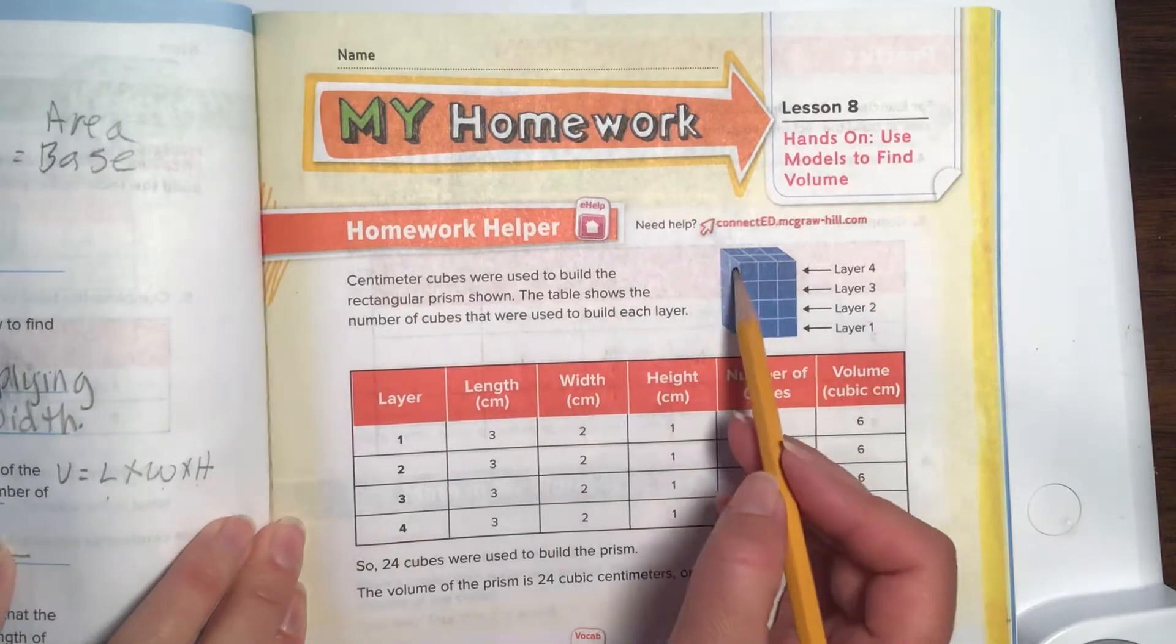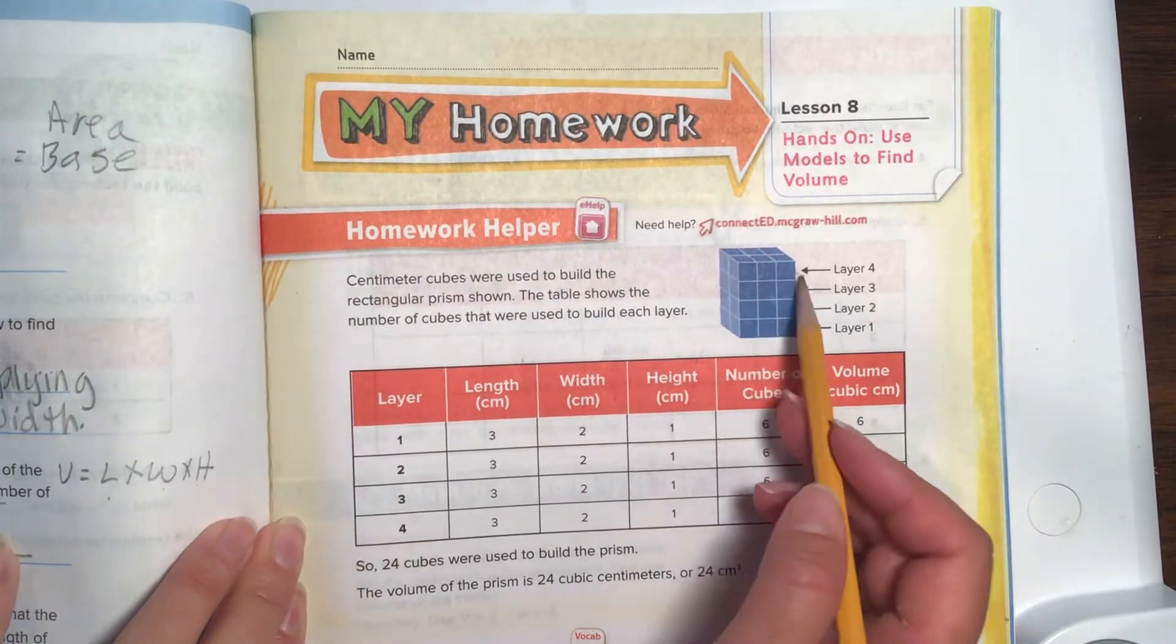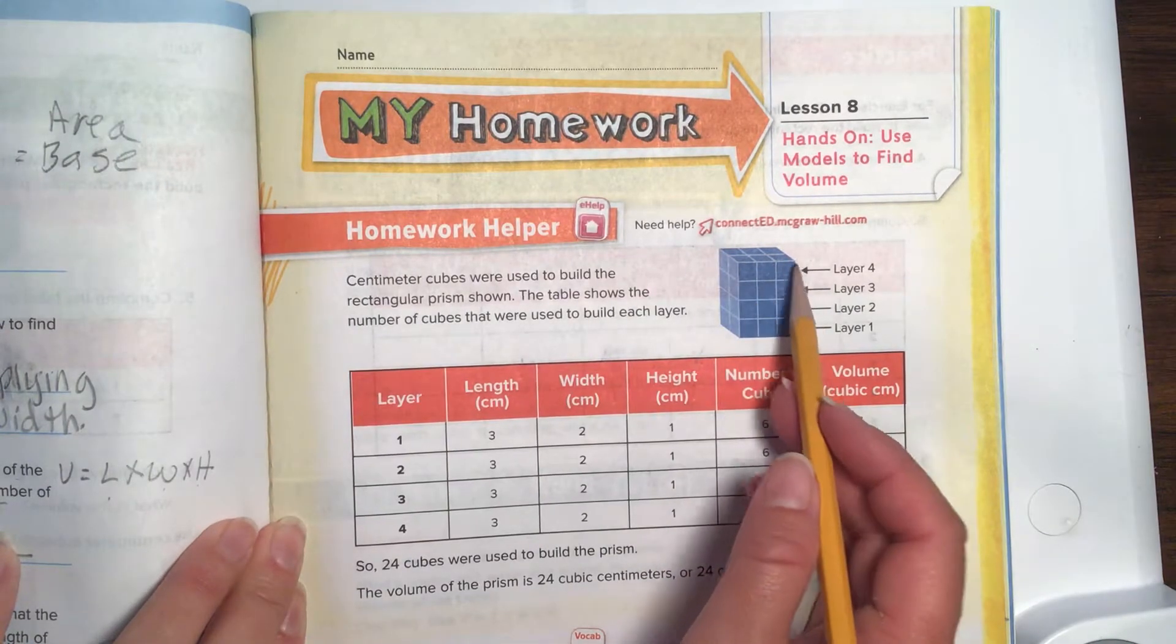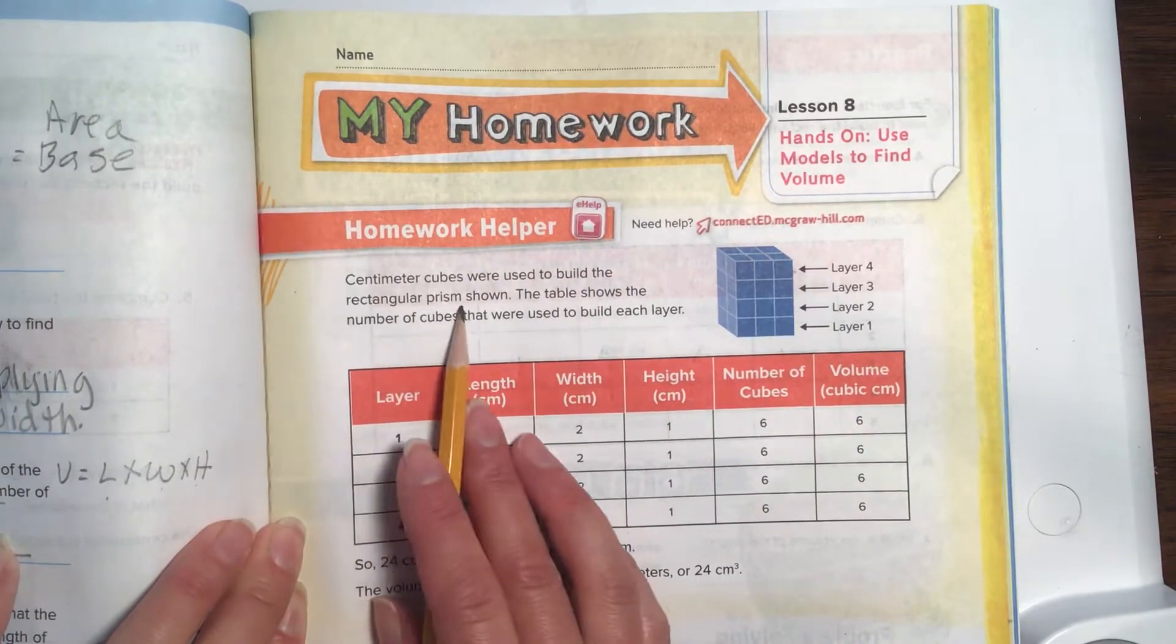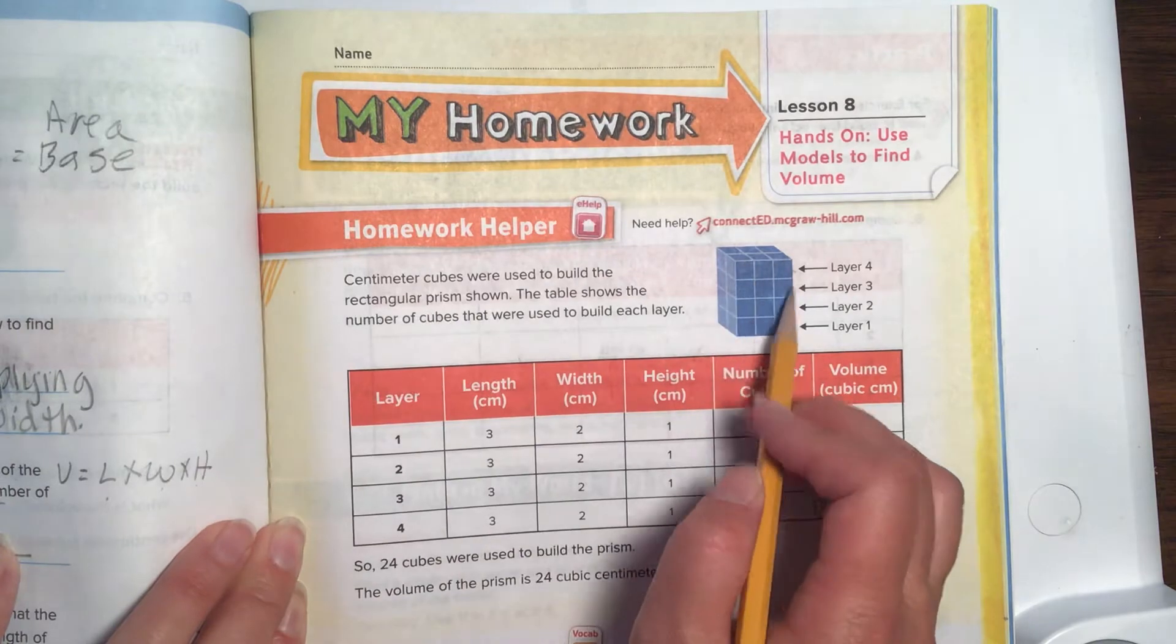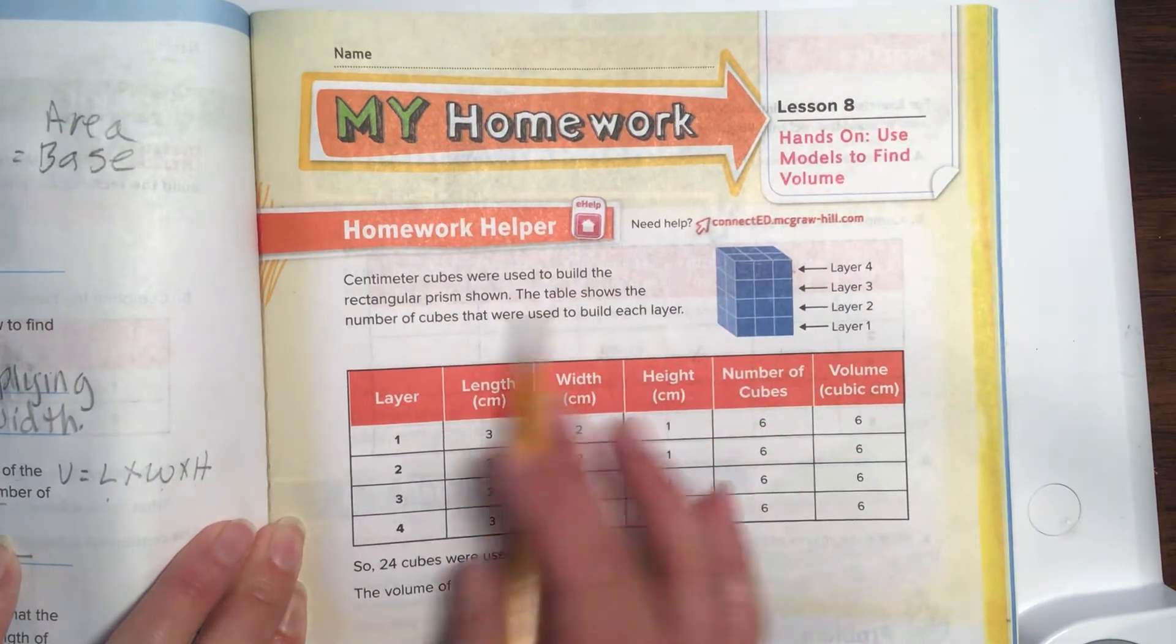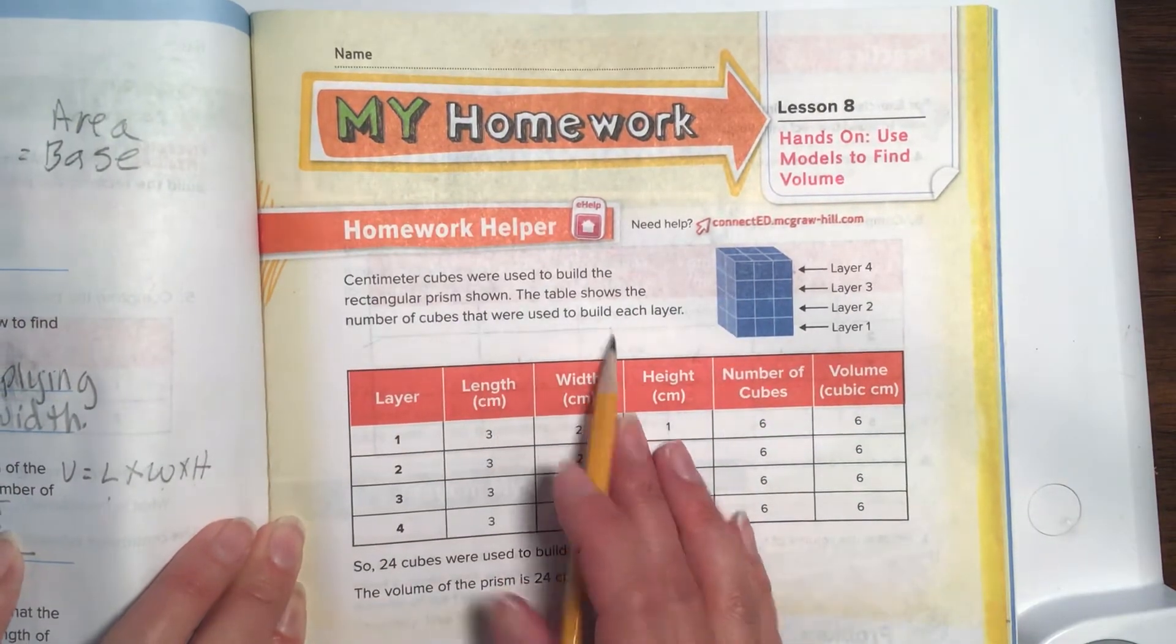Remember, another way to think of these is as if you're stacking sugar cubes. There isn't any gaps or overlaps on any of them. Centimeter cubes were used to build the rectangular prisms shown. There's a rectangle right here. The table shows the number of cubes used to build each layer.